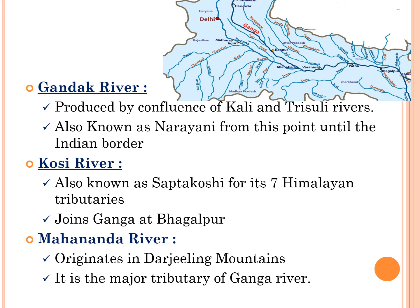The next left tributary is Gandak river, produced by the confluence of the Kali and Trishuli rivers, both originating in Nepal's Great Himalayan range. This river is also known as Narayani until the Indian border. The next left tributary is Kosi river, also known as Saptakoshi for its 7 Himalayan tributaries. It is an antecedent transboundary river flowing through Nepal and India. The Arun, Sun Kosi, and both Kosi branches originate in Tibet. Kosi river joins the Ganga at Bhagalpur.